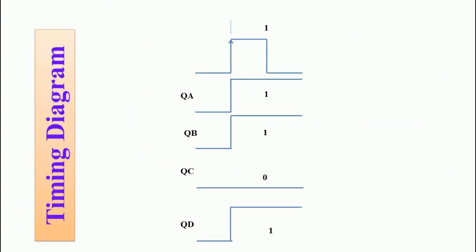This is the timing diagram of the parallel in parallel out shift register. Here we are using a positive edge clock pulse. On receiving the positive edge of the clock pulse, the transition takes place and the input data is shifted to the output. The output is QA=1, QB=1, QC=0, and QD=1.